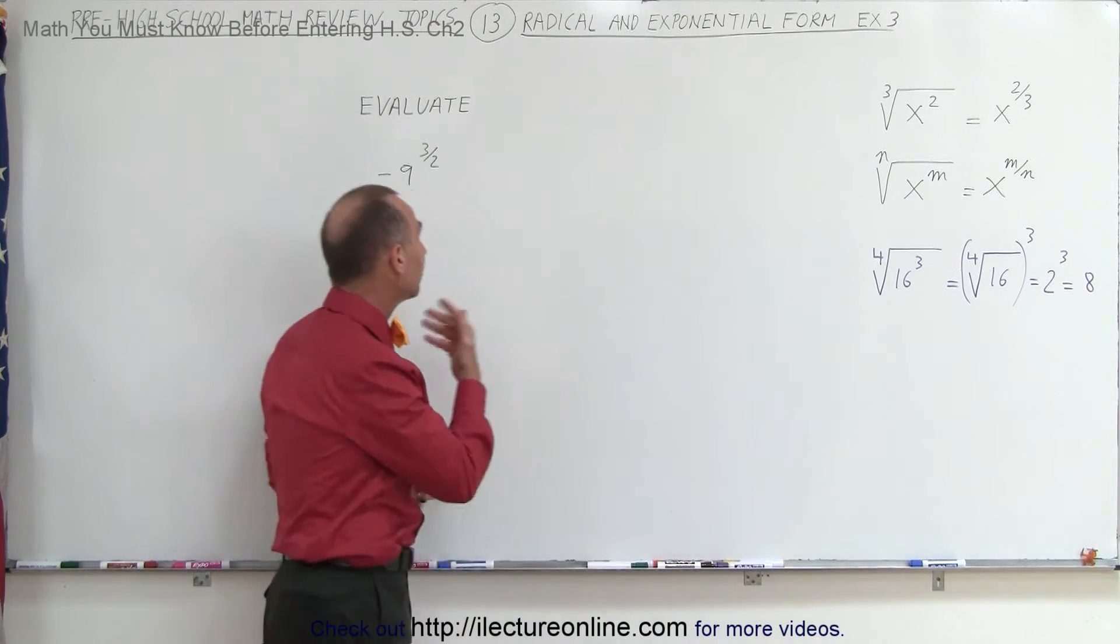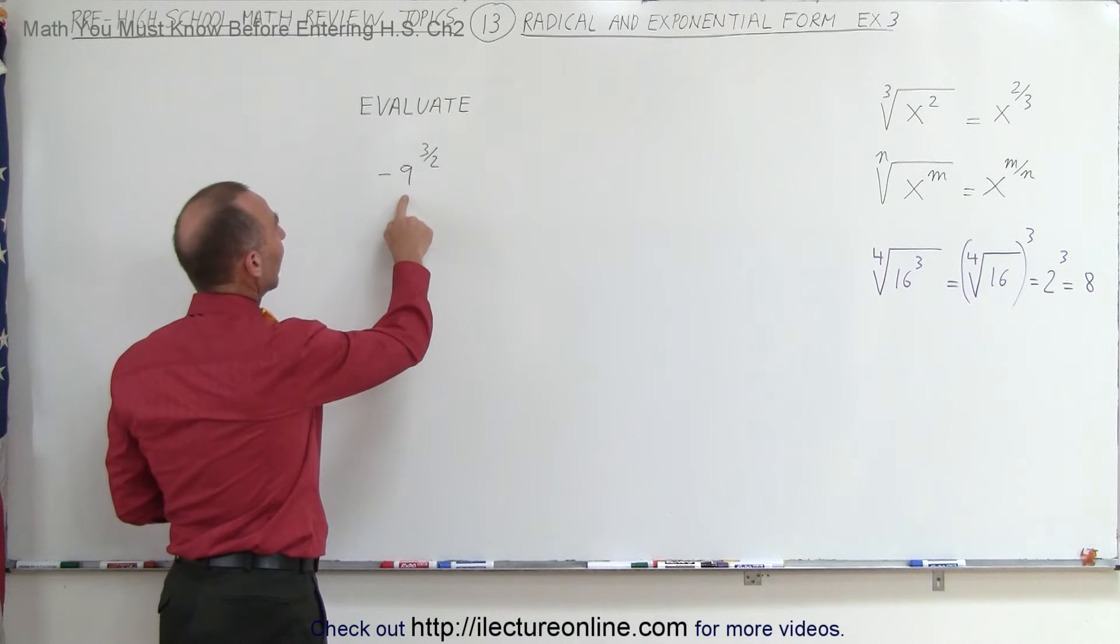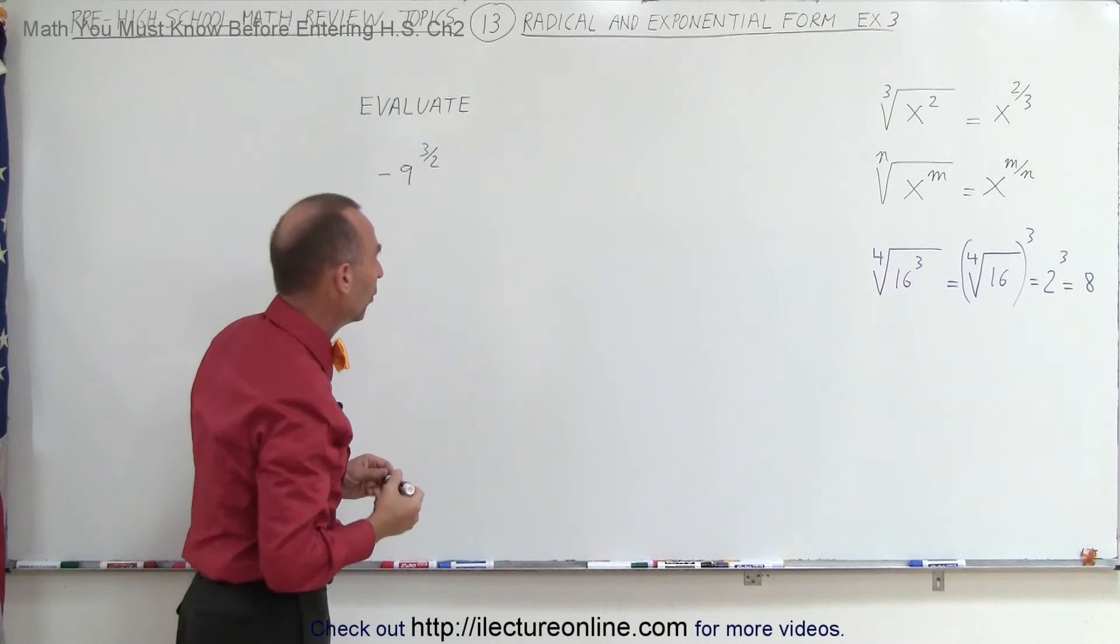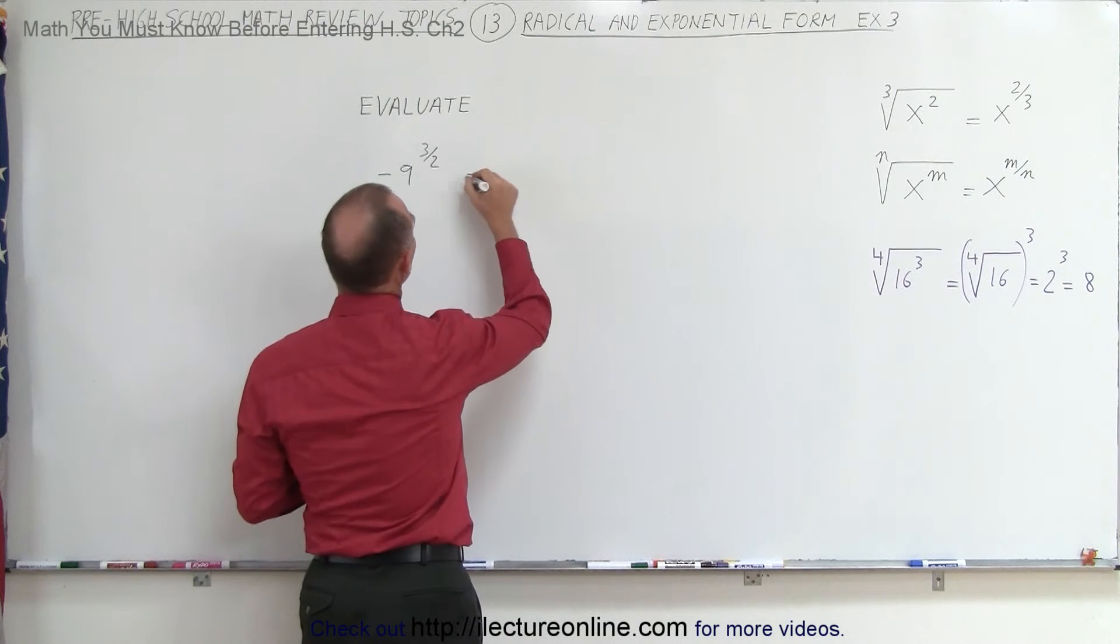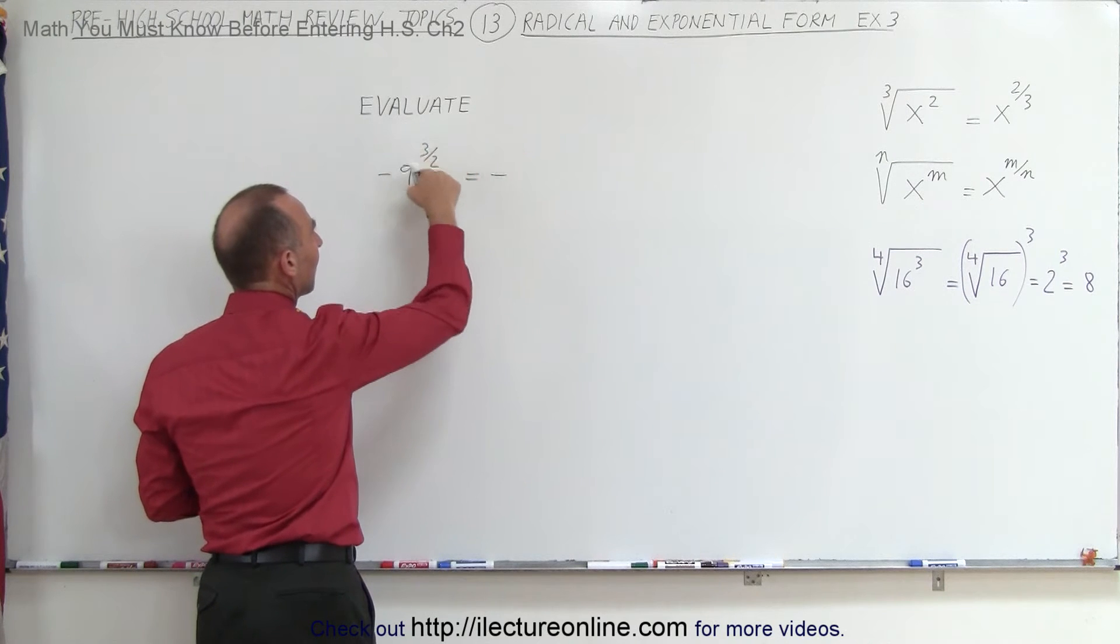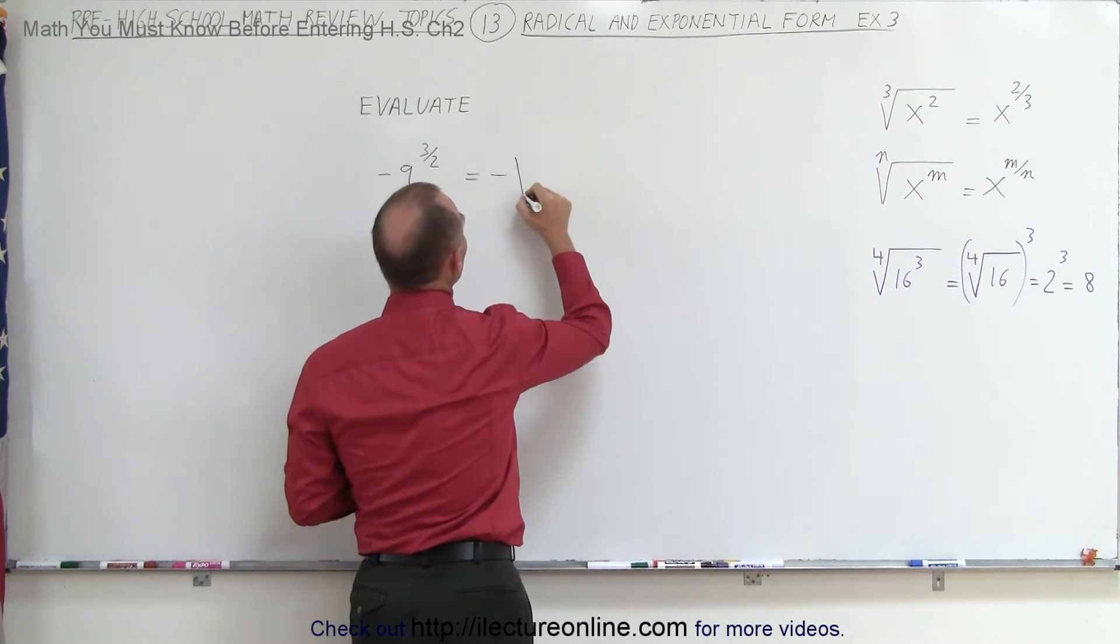So let's try that now on this particular example. Here we have minus 9 raised to the 3 halves power. We're going to write that in radical form. If we do, this is equal to negative, and again be careful, the negative sign is not affected by the exponent, so we put it to the outside, negative.